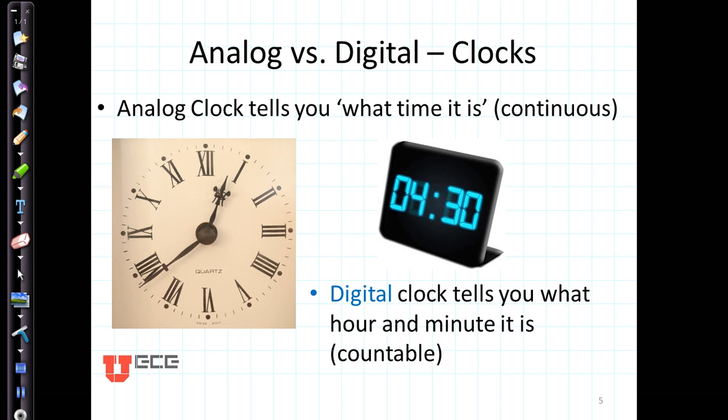Analog versus digital clocks both tell us time. The analog clock tells us what time it is in a continuous fashion. For example here, it's just a little before 12:40. The digital clock tells us what hour and minute is. That's a countable number of hours and minutes.